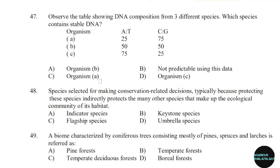47th question: Observe the table showing DNA composition from three different species. Which species contains the most stable DNA? Correct answer: Option C.